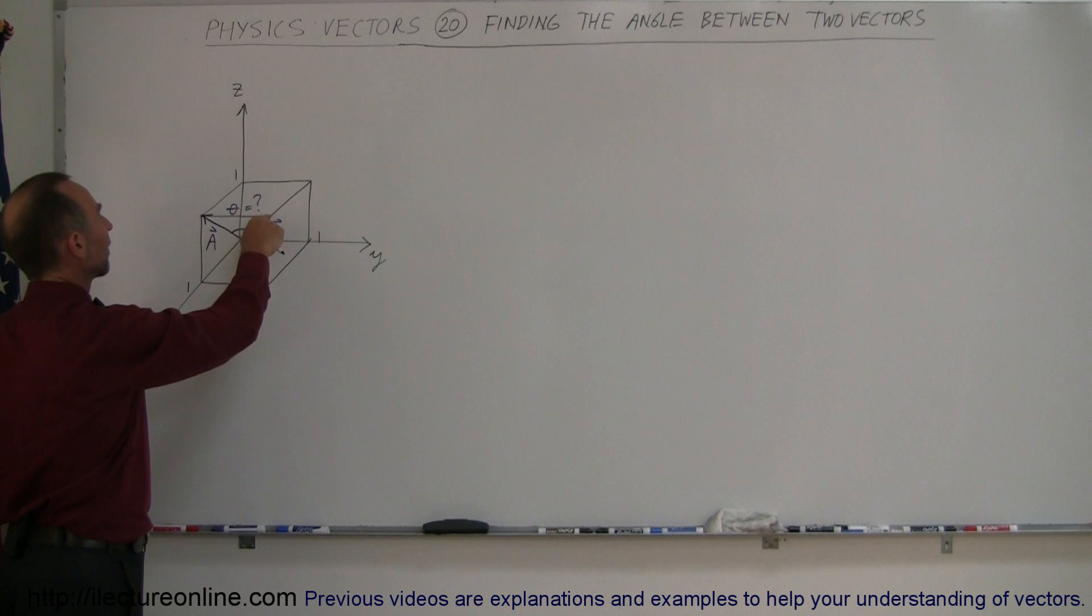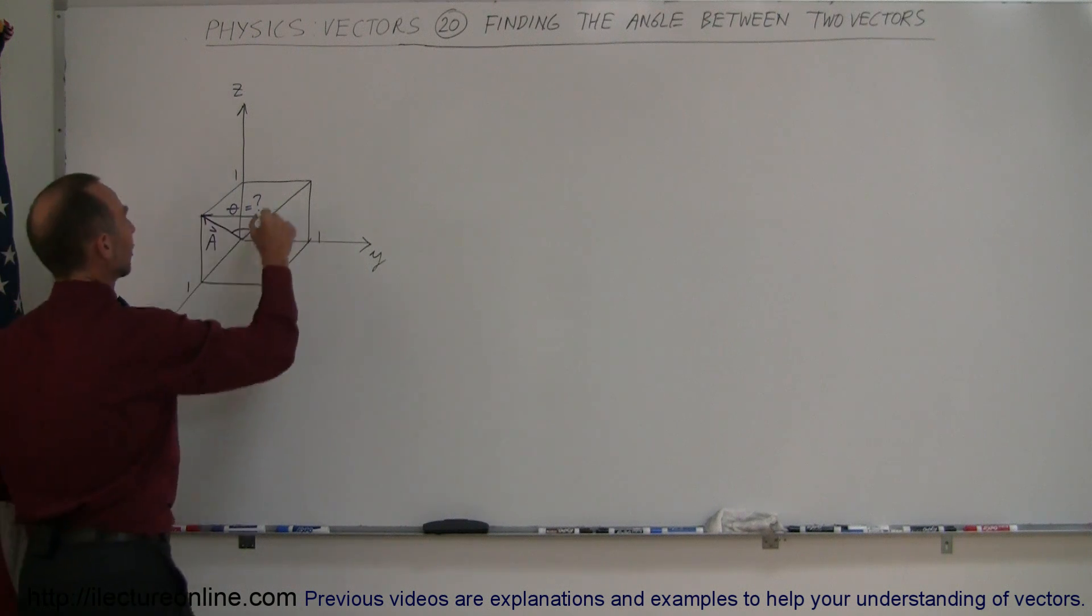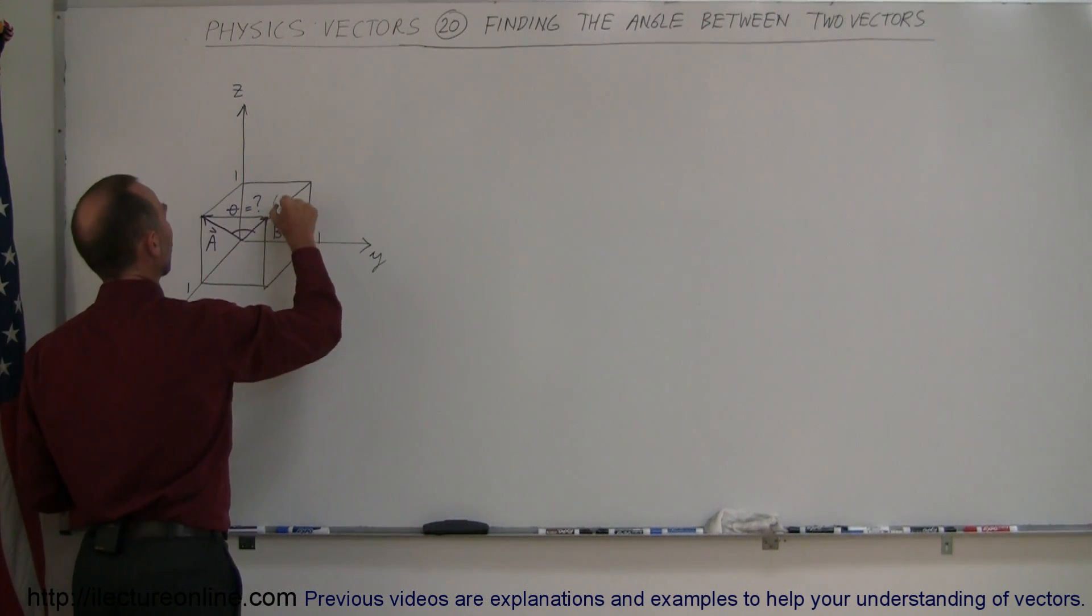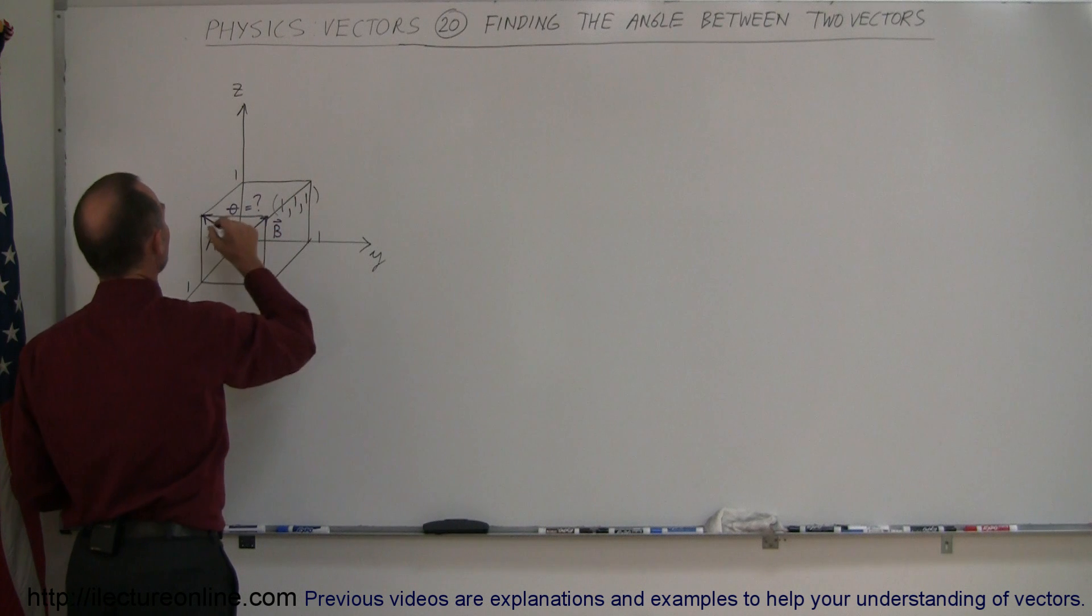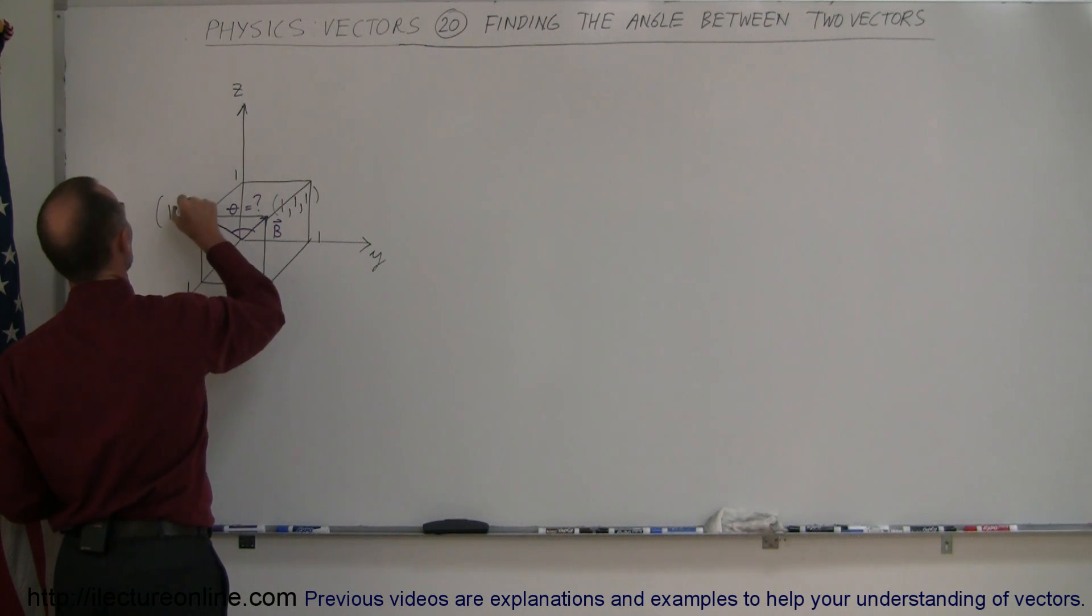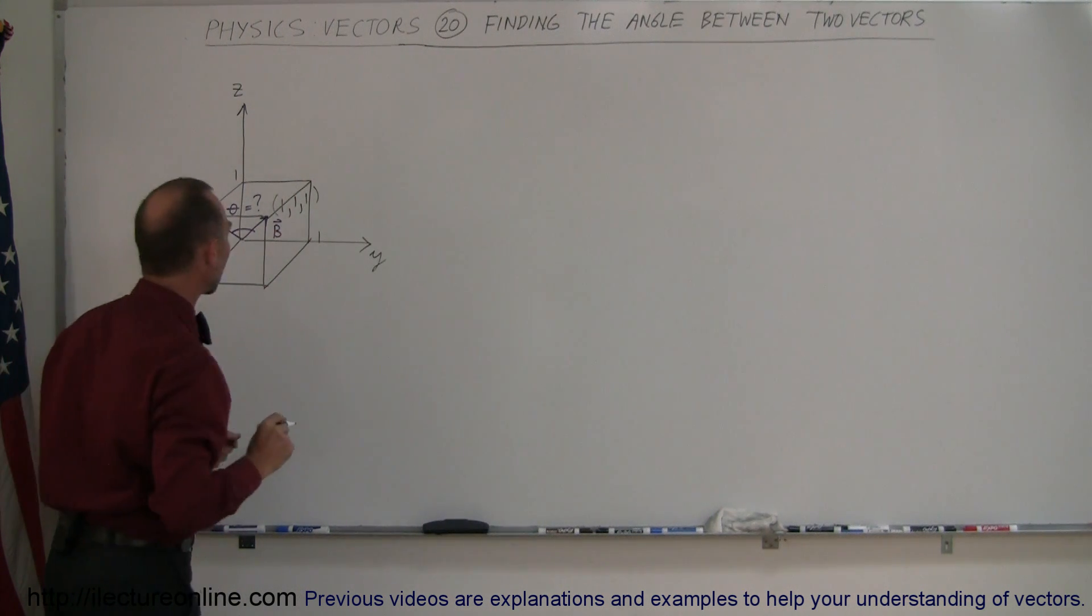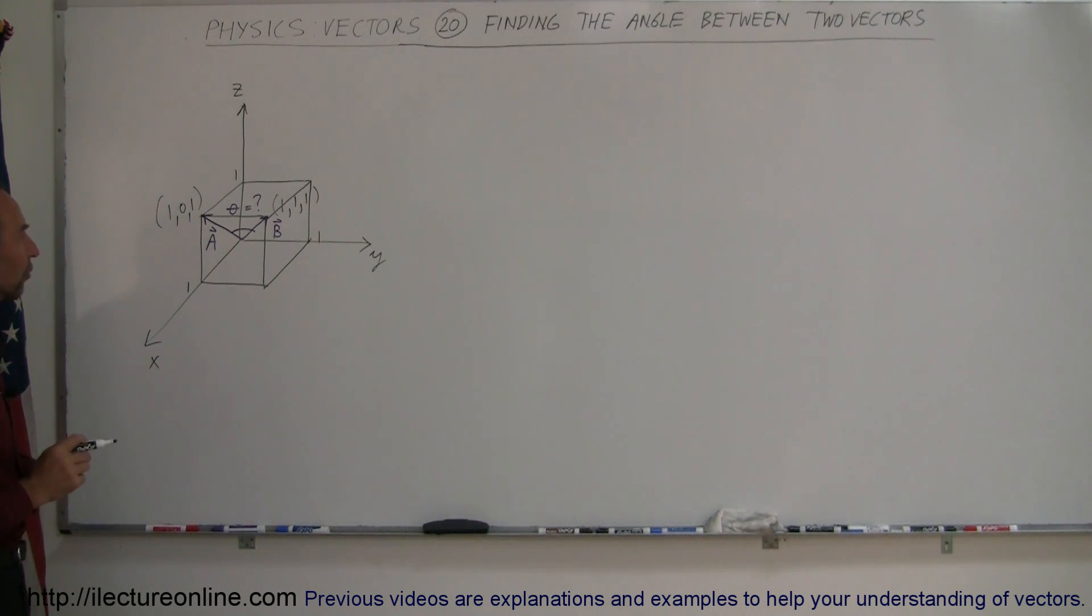The coordinates at that point are (1,1,1). So here we have the coordinates (1,0,1) and here we have the coordinates (1,1,1). That's the endpoint of the two vectors.